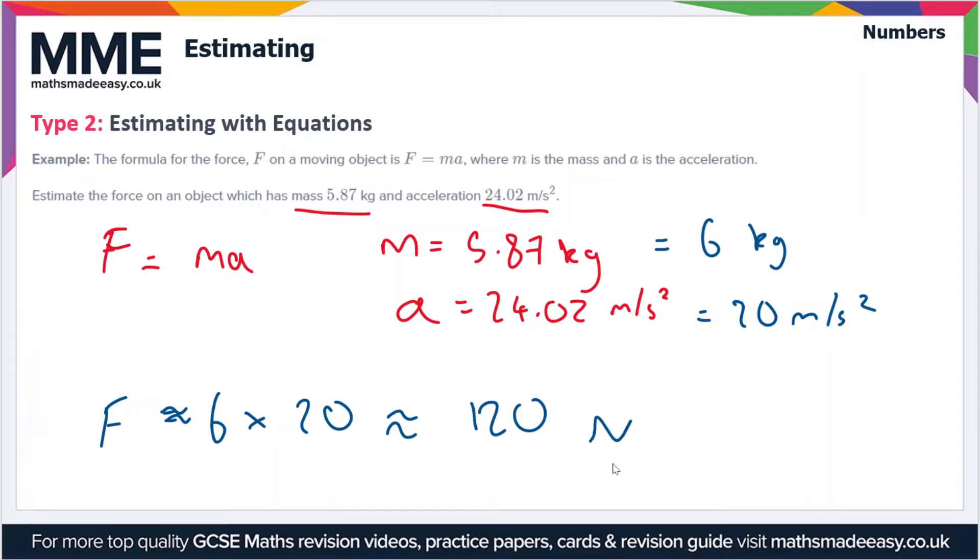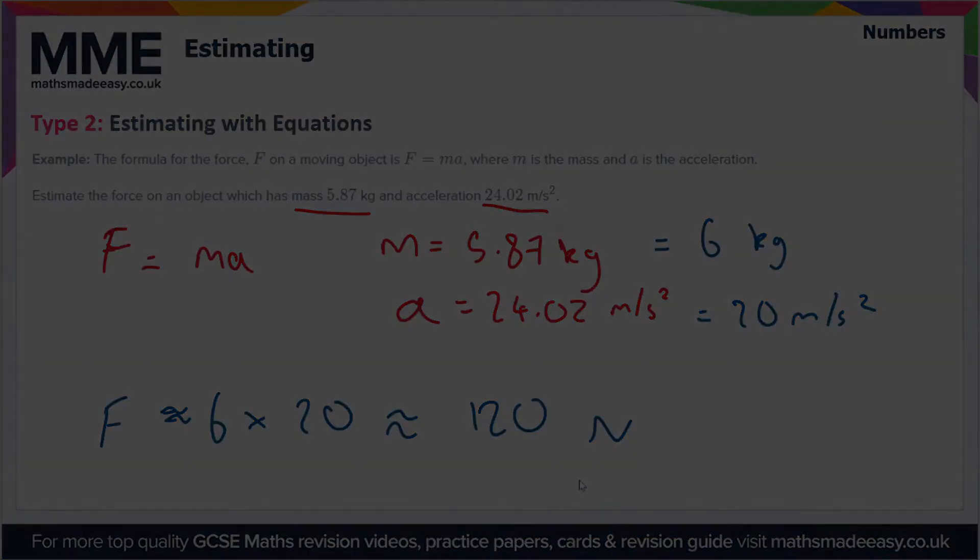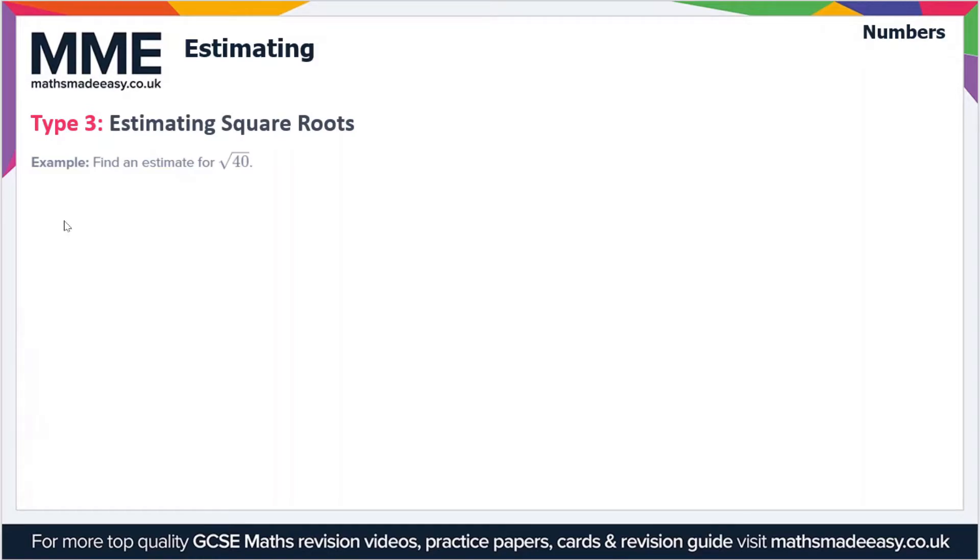The final skill that we'll look at is estimating square roots. In this example we're finding an estimate for the square root of 40. So let's just write out some square numbers: 1 squared, 2 squared, 3 squared, 4 squared, 5 squared, 6 squared, 7 squared and we'll stop there.